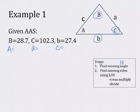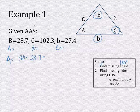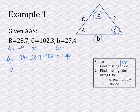All the angles of a triangle always add up to 180 degrees. So to find big A, take 180 and subtract the two angles given: minus 28.7 minus 102.3. When you do that, you get angle A equals 49 degrees. Now to find little a first, set up the ratio: little a over sine of A, which is 49, equals little b over sine of big B.